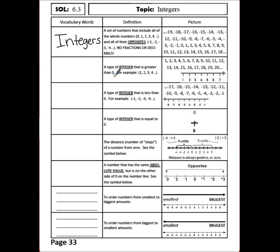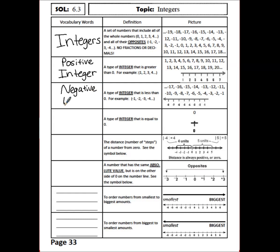A type of integer that is greater than 0, or everything to the right of 0 on the number line, is called a positive integer. This is one of the three different types of integers. Another type of integer that is less than 0, or everything to the left of 0 on the number line, is called a negative integer. This is the second type of integer.